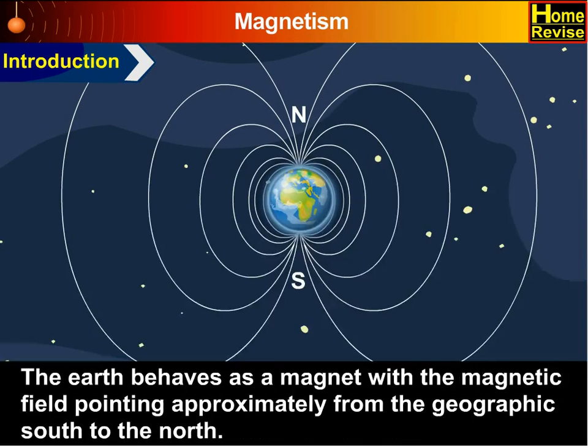The earth behaves as a magnet with a magnetic field pointing approximately from the geographic south to the north.